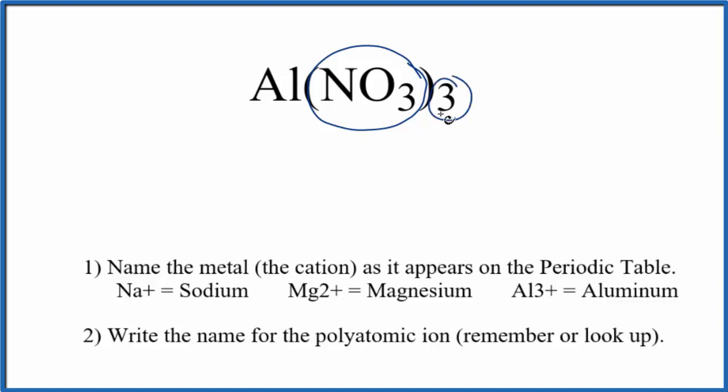In fact, we have three of them. So we have the nitrate ion here, and then we have aluminum, which is a metal. So we have a metal and this polyatomic ion, which is made of nonmetals. Metal and nonmetals, that's going to be ionic, and we can use these rules here.